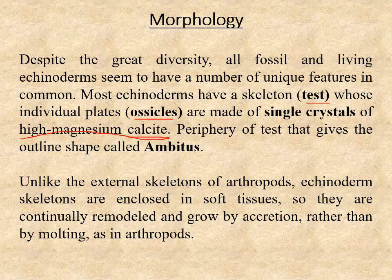If we look at the echinoderm test from the top, the periphery — that is the maximum diameter or maximum outline shape — what we get when looking at the echinoderm test from the top is called its ambitus. Unlike the external skeletons of arthropods, the echinoderm skeletons are enclosed in a soft protoplasmic skin.